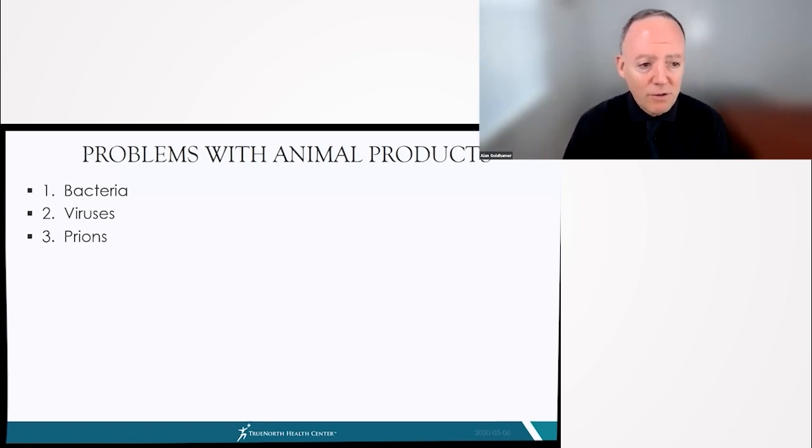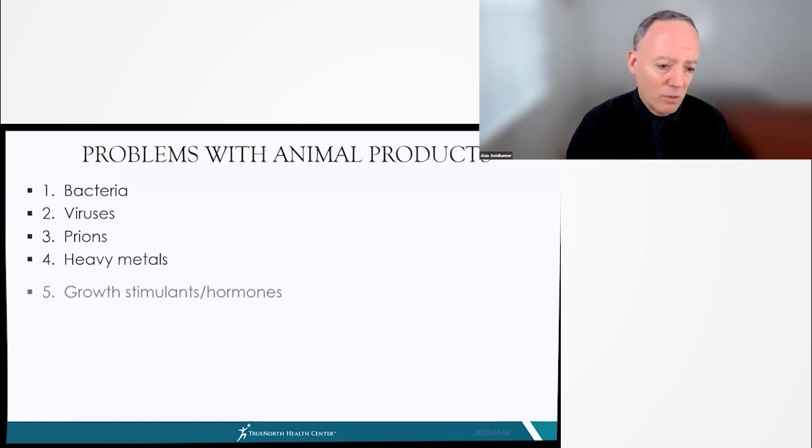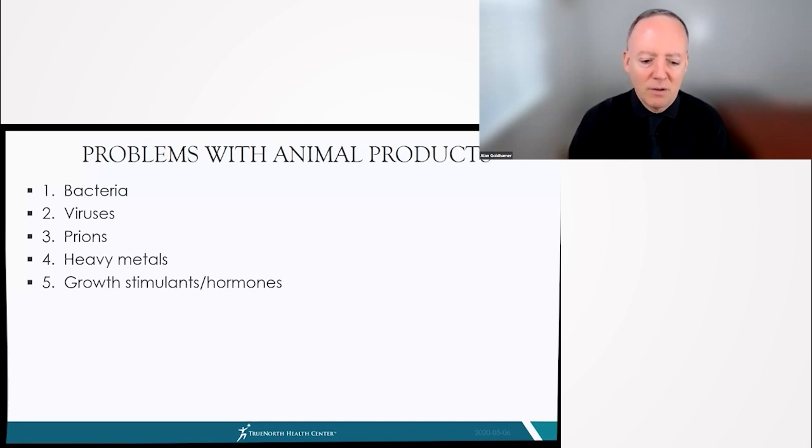So in addition to prions and viruses and bacteria, we also have problems with heavy metals. Heavy metals, not just heavy metals, but also growth stimulants and hormones abundantly used with animals to make them bigger and fatter and make more product, make them more profitable.